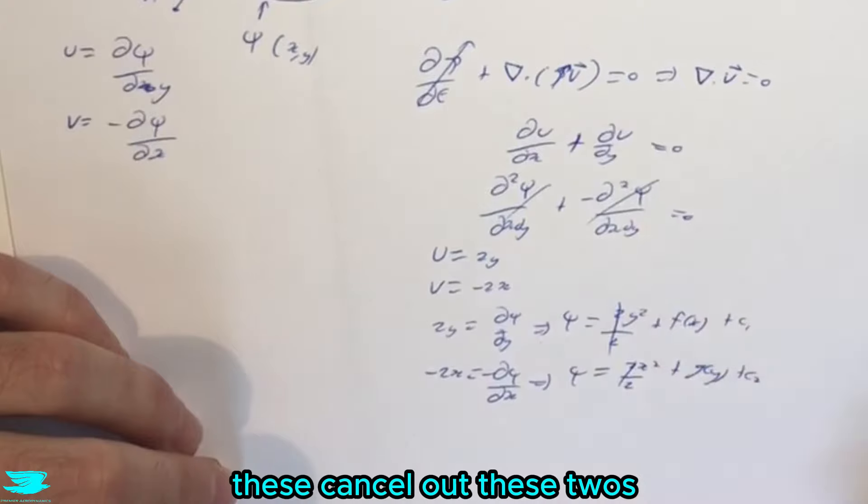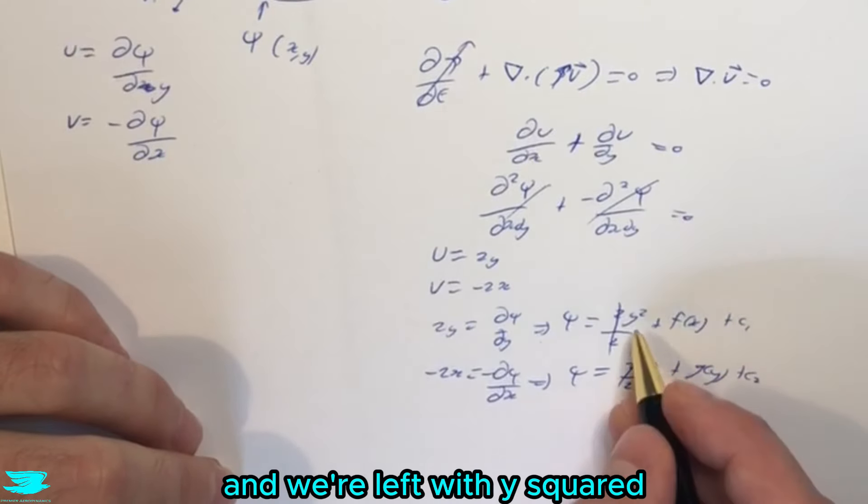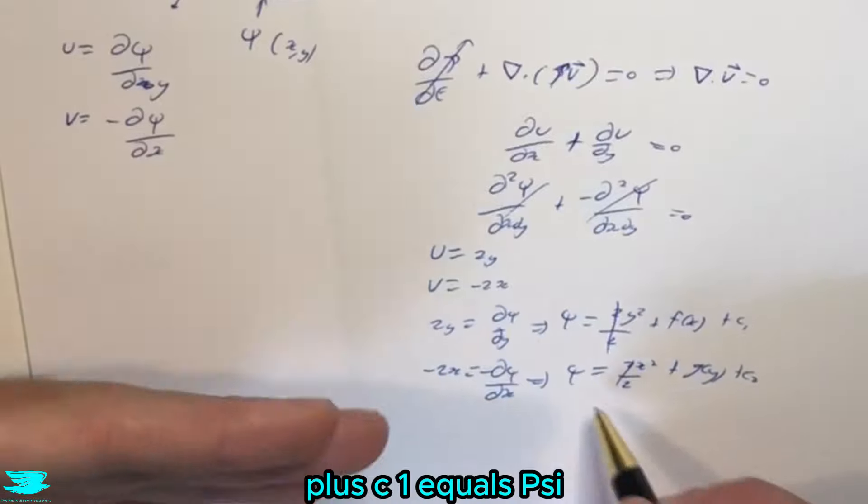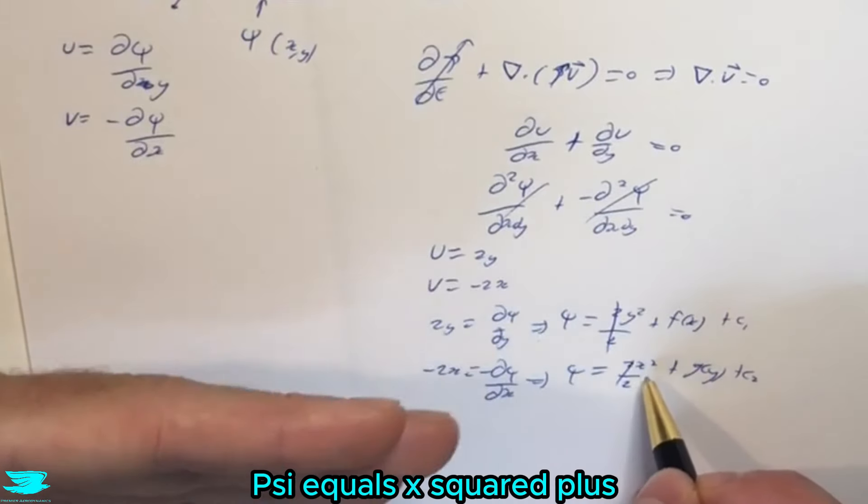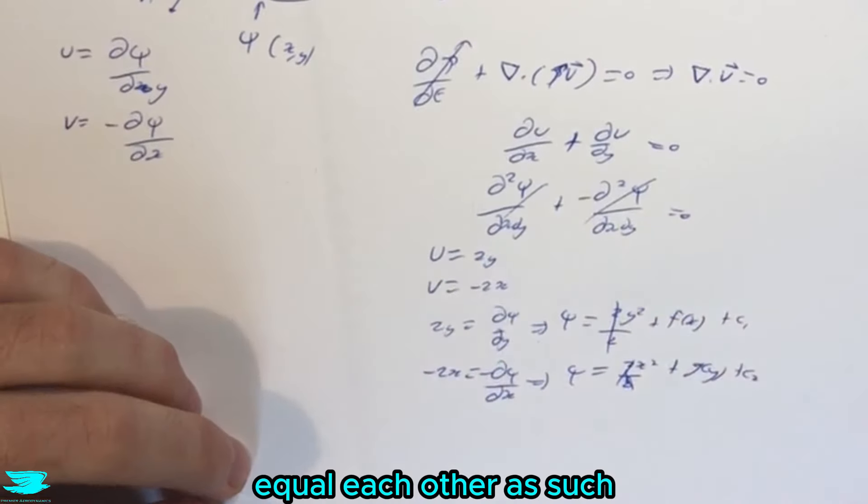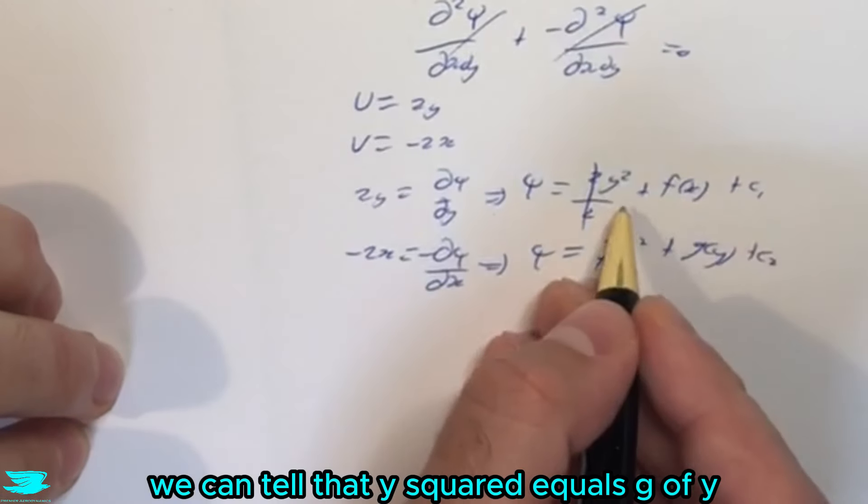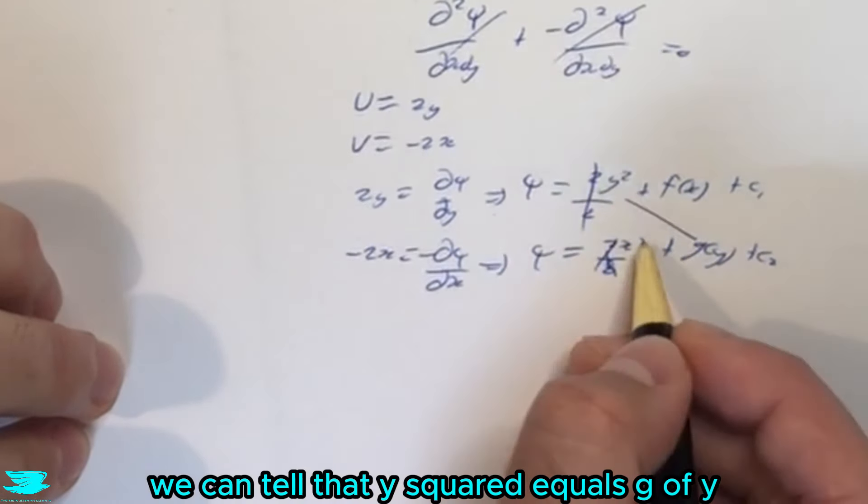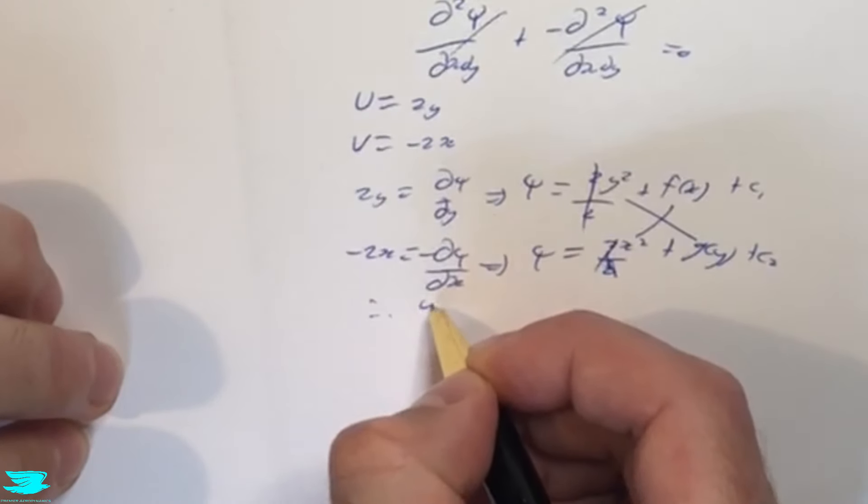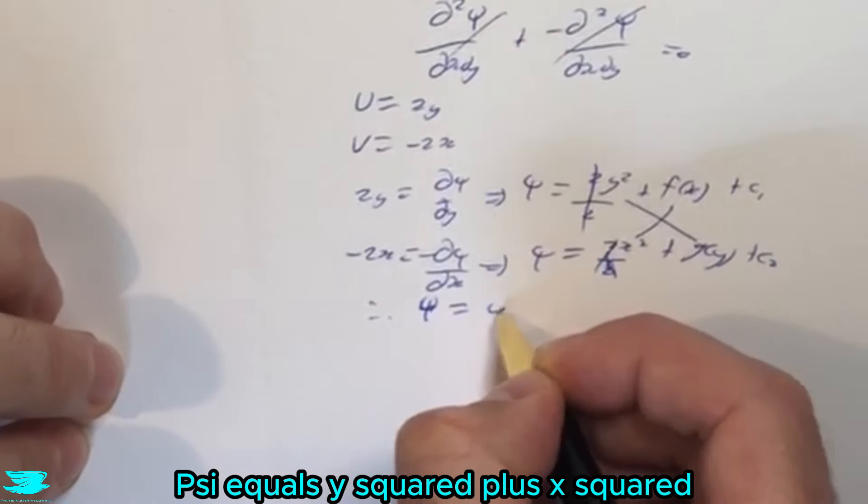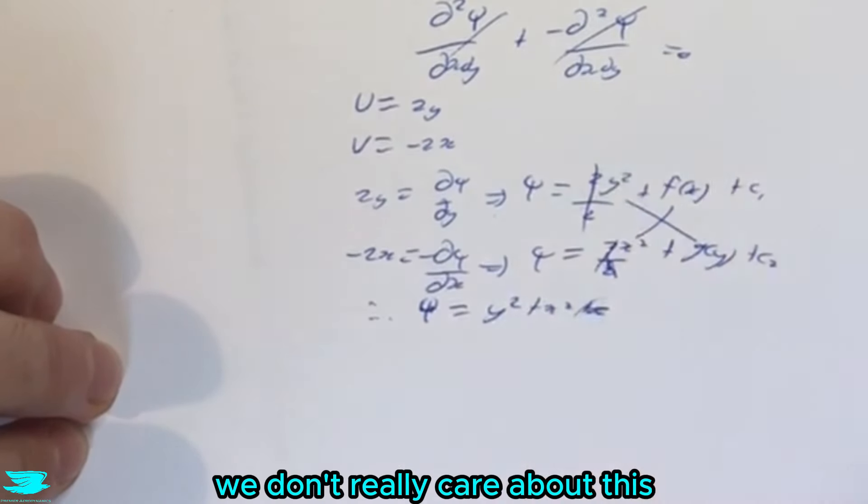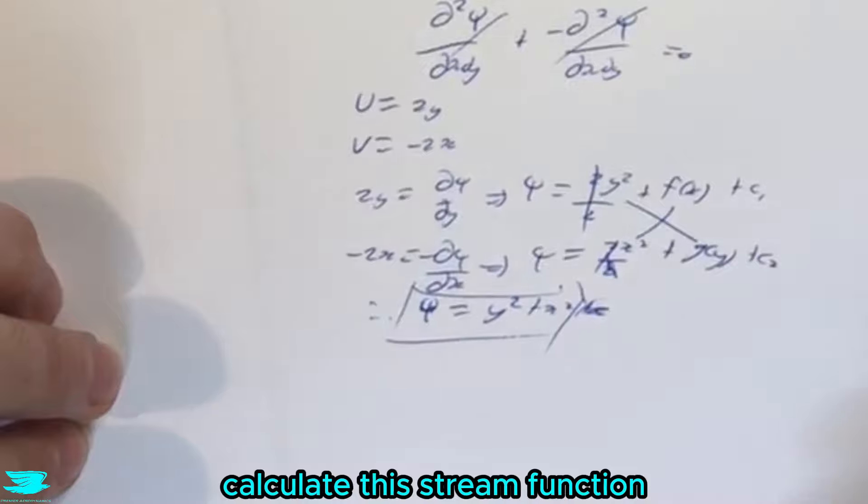So these cancel out—these twos—and we're left with y squared plus some function of x plus c1 equals psi, and also psi equals x squared plus some function of y plus c2. So these two have to equal each other. As such, we can tell that y squared equals g of y, and x squared equals f of x. As such, psi equals y squared plus x squared plus some constant, and we don't really care about this anyway.